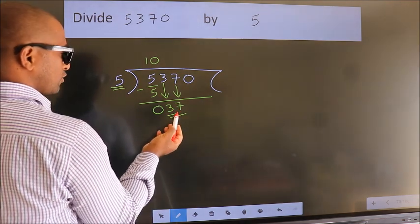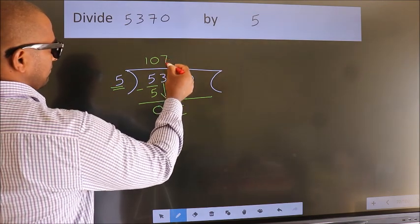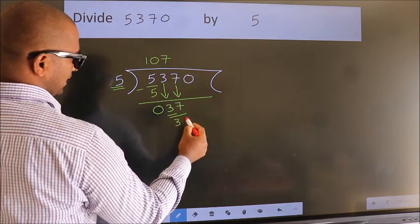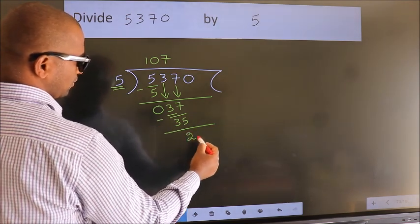A number close to 37 in the 5 table is 5 sevens, 35. Now we subtract. We get 2.